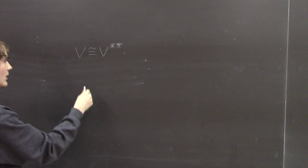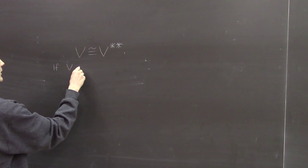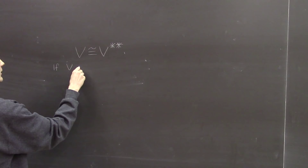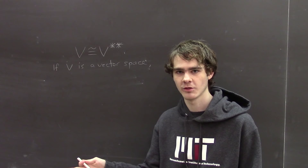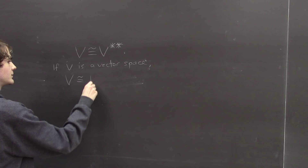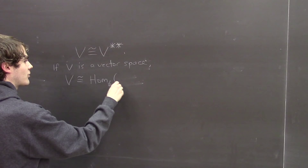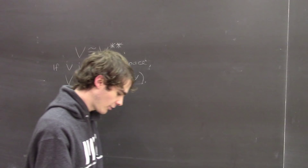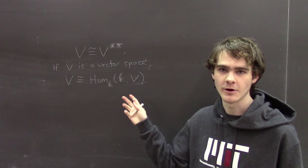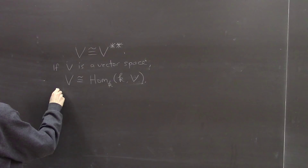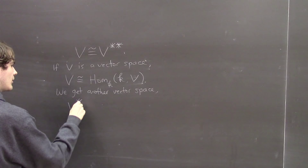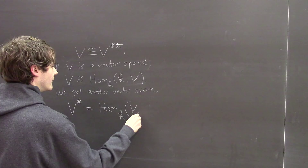Let me remind you: if V is a vector space, you're probably familiar with the fact that a linear map from the underlying field K into V is the same thing as a vector. So V is naturally isomorphic to the set of K-linear maps from K into V. It seems natural to swap the arguments of this hom-functor and call that the dual space of V — another vector space denoted V*, defined to be the set of K-linear maps from V to K.